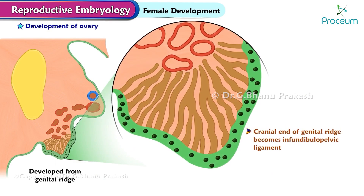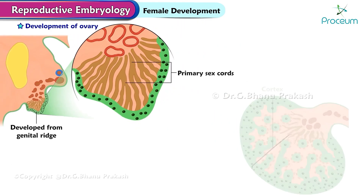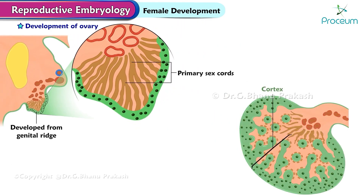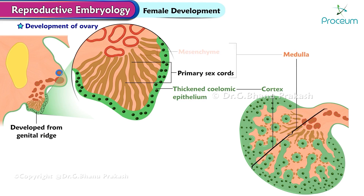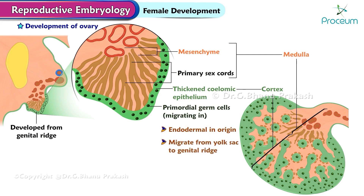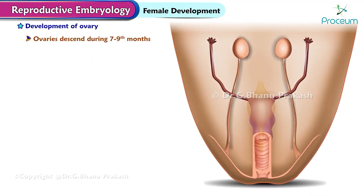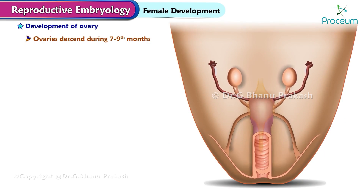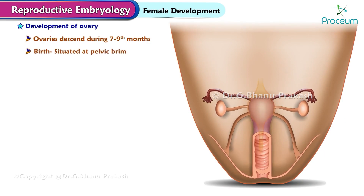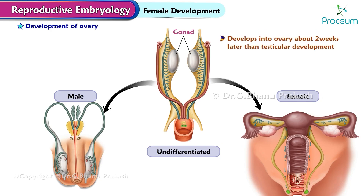The cranial end of the genital ridge becomes the infundibulopelvic ligament. The ovary develops from the middle part of the genital ridge. The cortex and covering epithelium are developed from the coelomic epithelium, and the medulla from the mesenchyme. The germ cells are endodermal in origin and migrate from the yolk sac to the genital ridge. The number of oogonia reaches its maximum at the 20th week. The ovaries descend during the seventh to ninth months, and at birth they are situated at the pelvic brim. The bi-potential gonad develops into an ovary about two weeks later than testicular development.